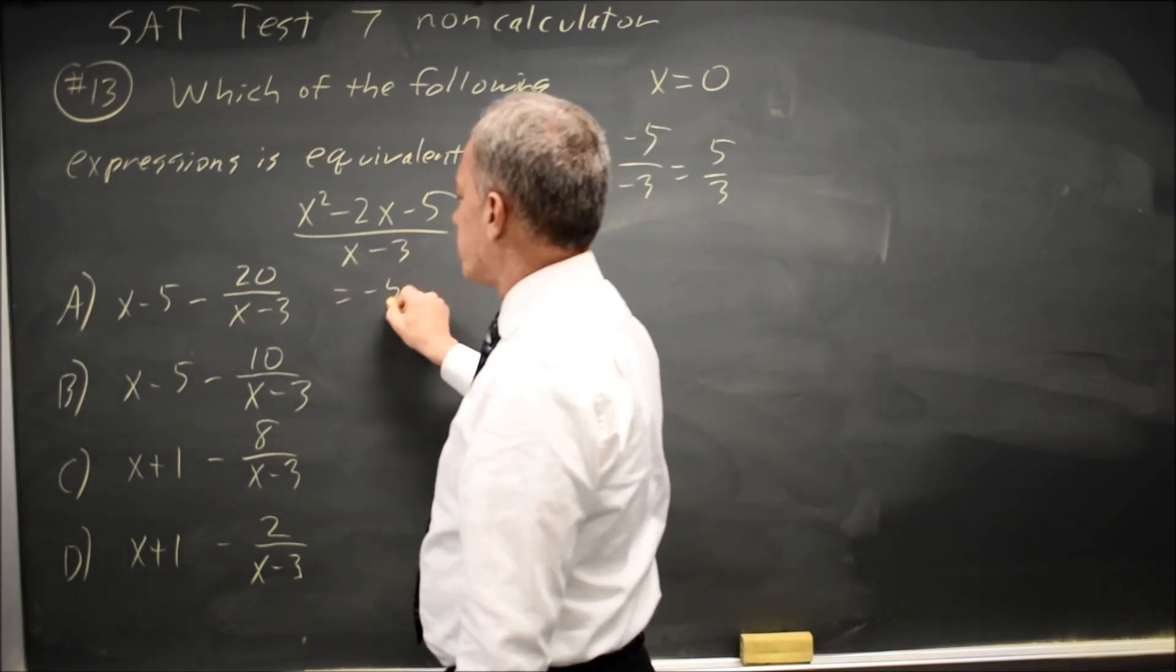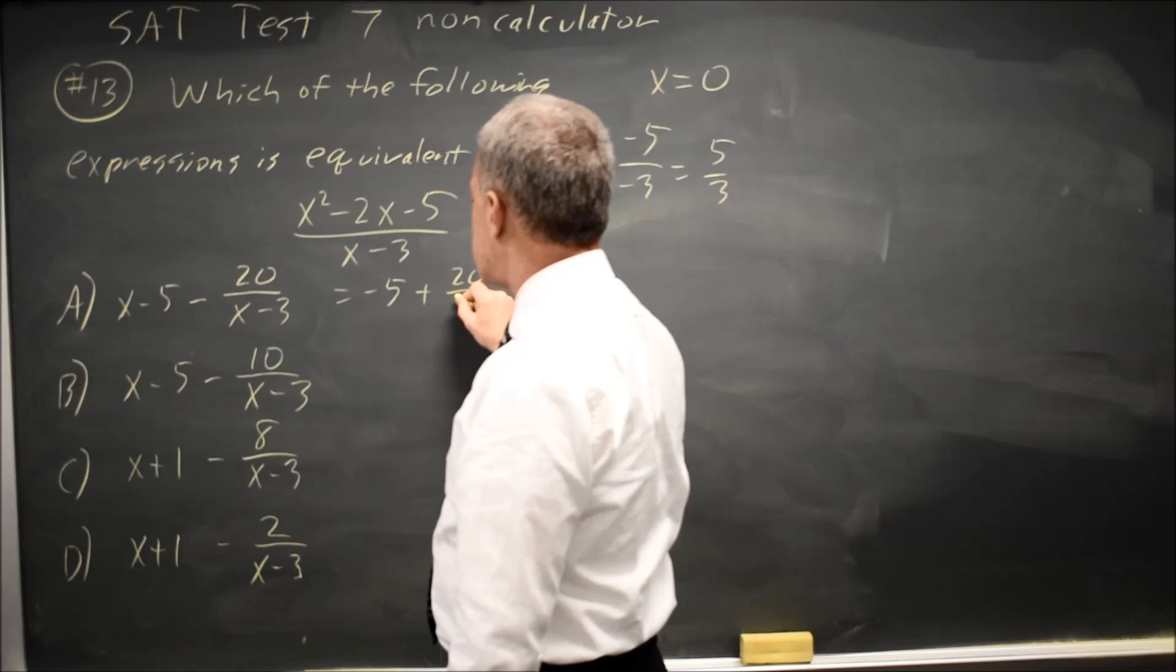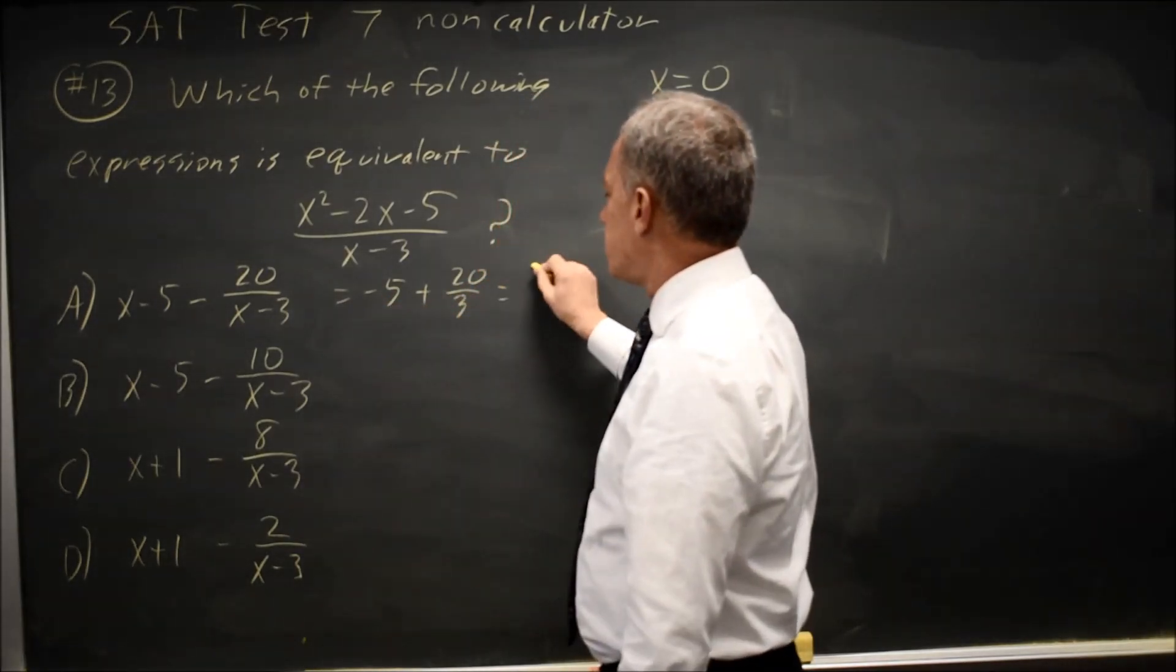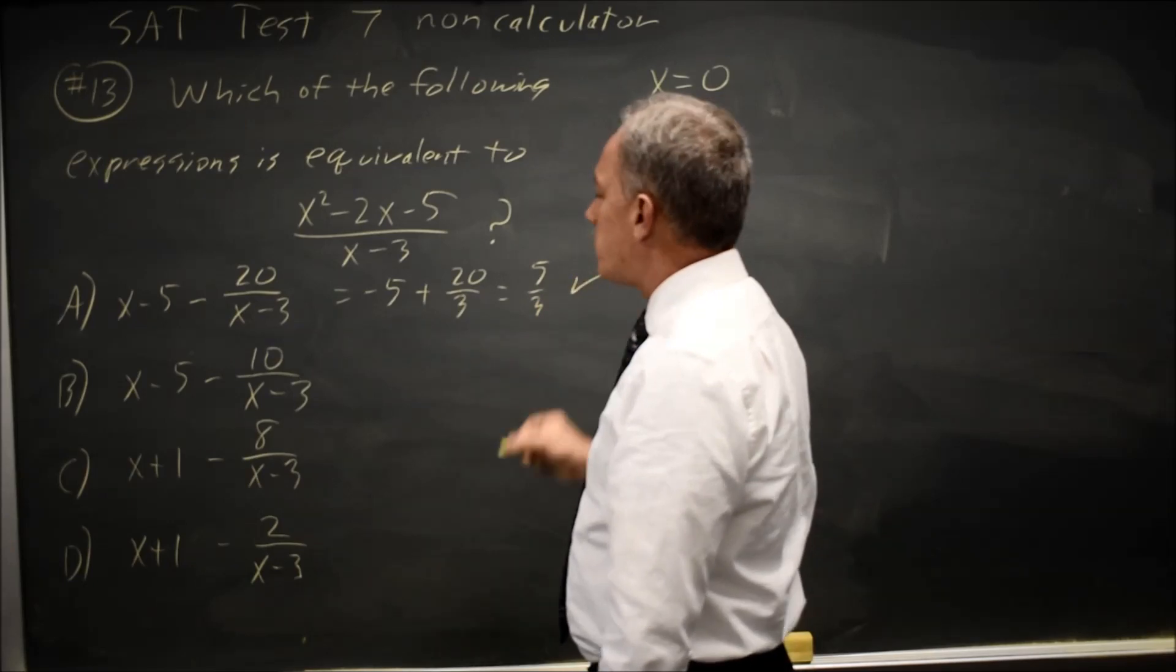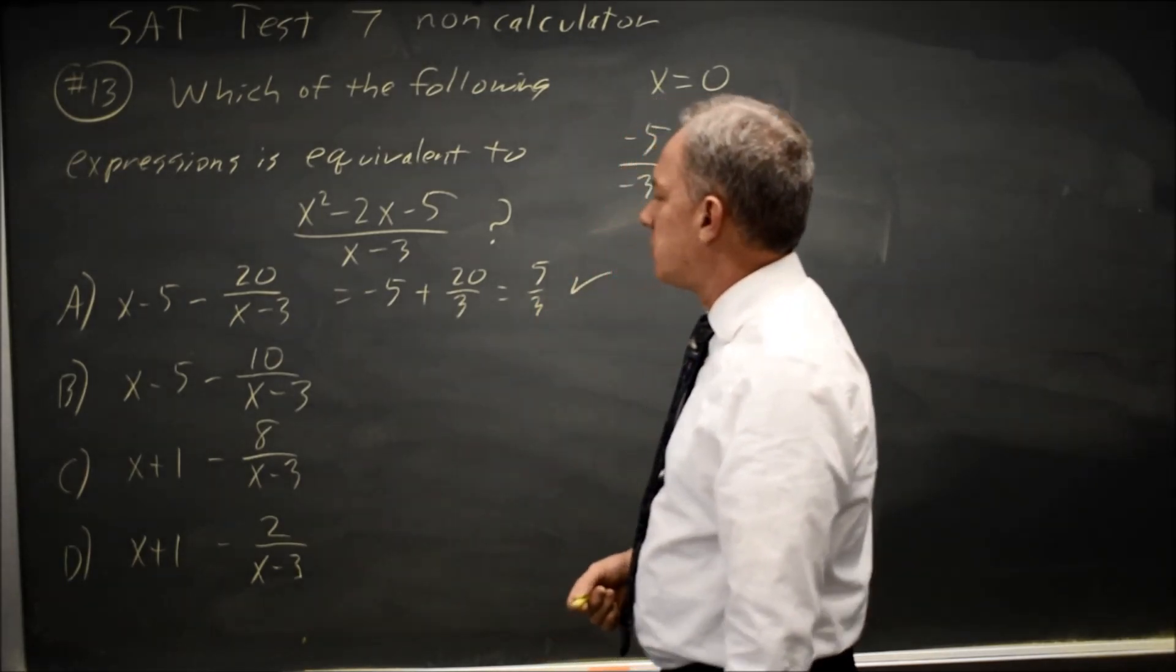Choice A is 0 minus 5 minus 20 over negative 3 is plus 20 over 3. Negative 15 over 3 plus 20 over 3 is 5 over 3. That might work, but it's not guaranteed because other answers may also match.